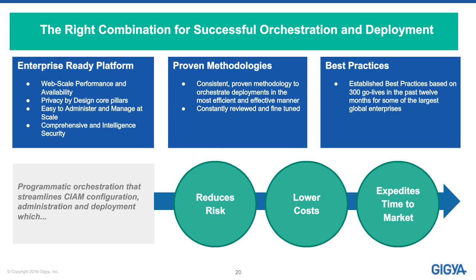The right combination for successful orchestration and deployment is a mixture of using an enterprise-experienced platform, building on your own deployment experience, and best practices around privacy by design, privacy strategy, communication strategy, and UI strategy. Ultimately, this reduces risk in deployments, lowers cost by speeding up deployments and making updates cheaper through centrally managed logic, and expedites time to market by using pre-validated, pre-defined tools that let you reach market faster with new features.